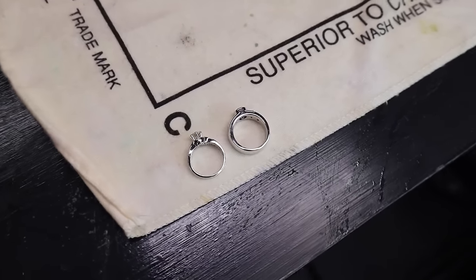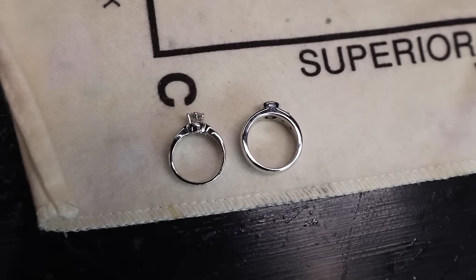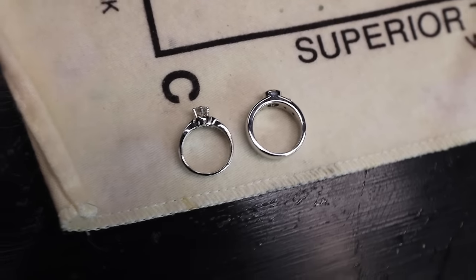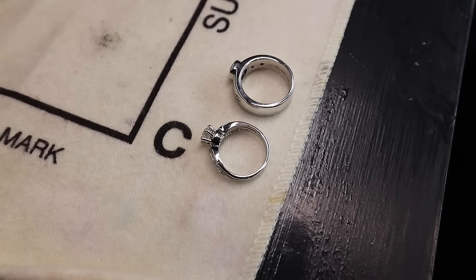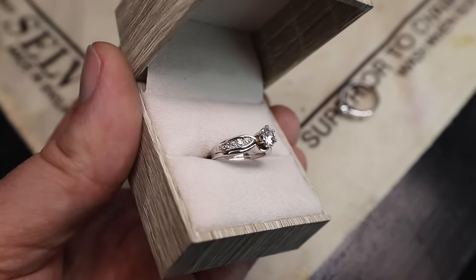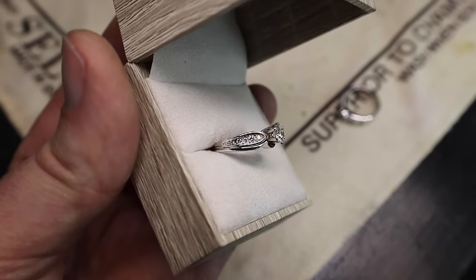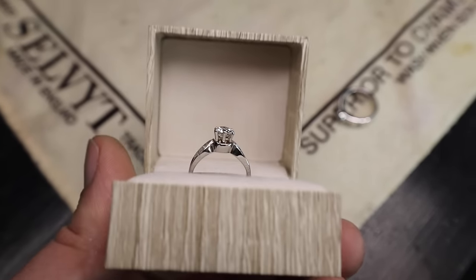And there we have it, both the yellow gold ring and the white gold ring side by side. Can you tell which one is which? Obviously we know which one is which in this situation, but it's really cool that they both look bright white.